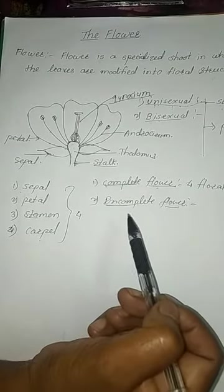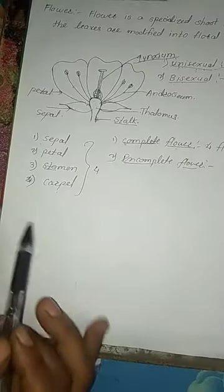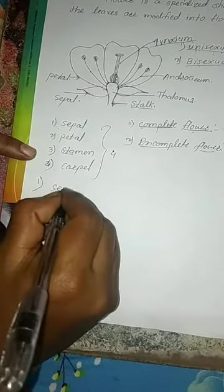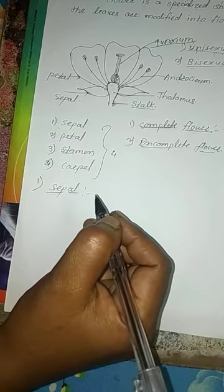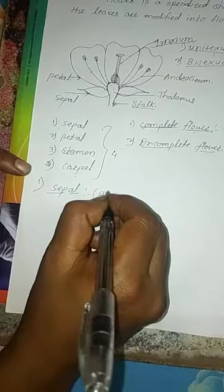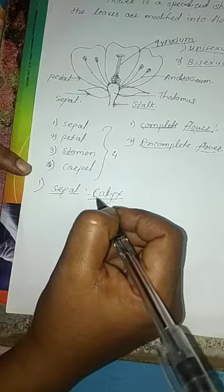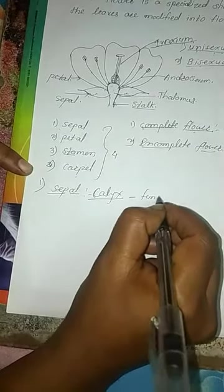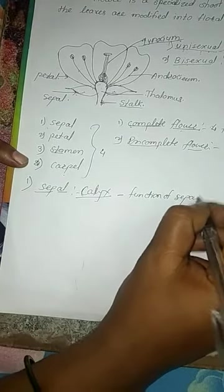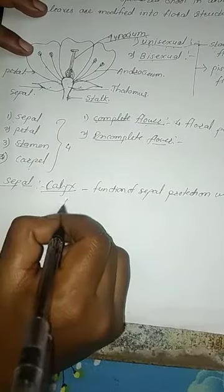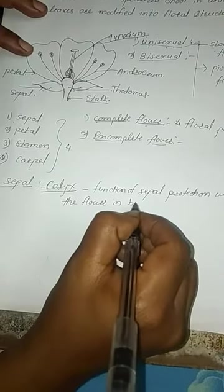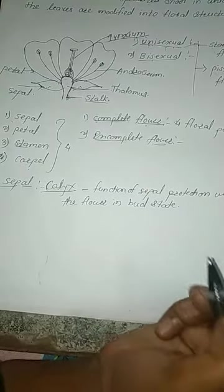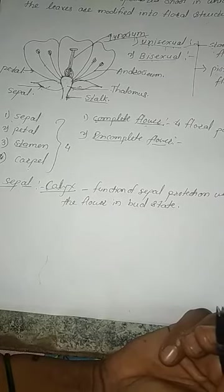Now let's see each part of the flower in detail. First is the sepal. Singly it is called sepal and collectively the calyx. It is green in color. The main function of the sepal is protection — it protects the flower in the bud state. For example, when the rose flower is in bud state, the bud is covered by the green sepals.